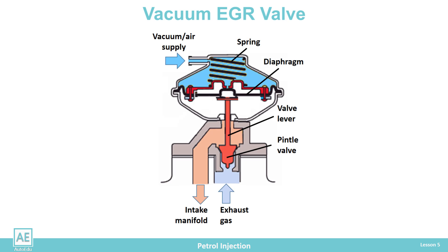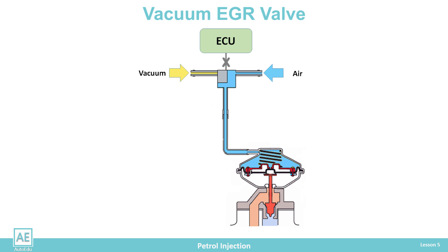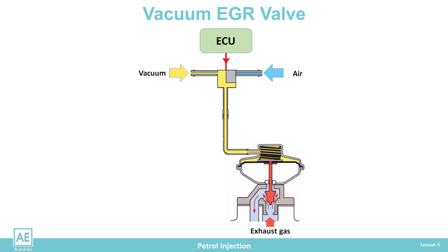The vacuum-controlled EGR valve contains a membrane that separates two chambers. A vacuum or external air is supplied to one chamber from the electromagnetic valve, which acts on the diaphragm together with a spring. A valve lever is attached to the other end of the diaphragm, and at the lever end is a poppet valve for closing the exhaust gas recirculation channel. When outside air is in the upper chamber, it together with the spring pushes the diaphragm and closes the EGR valve. To open the valve, the engine control unit supplies voltage to the solenoid valve, which switches to pass the vacuum.